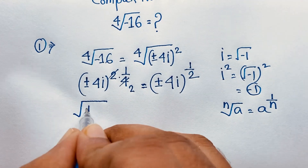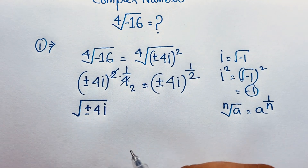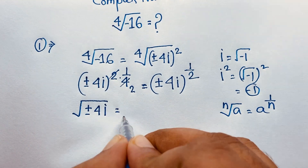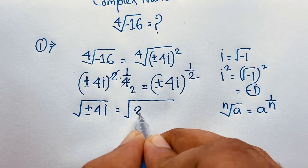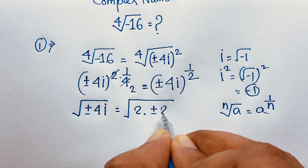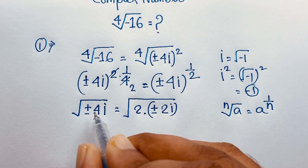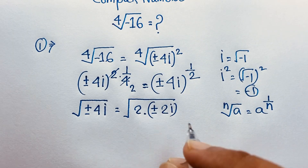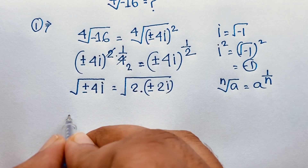And this is plus or minus 4i. Now this value will be square root of 2 times plus or minus 2i — because 2 times 2 equals 4. So now, if I separate this, you can see it will be square root 2 times square root of plus or minus 2i.